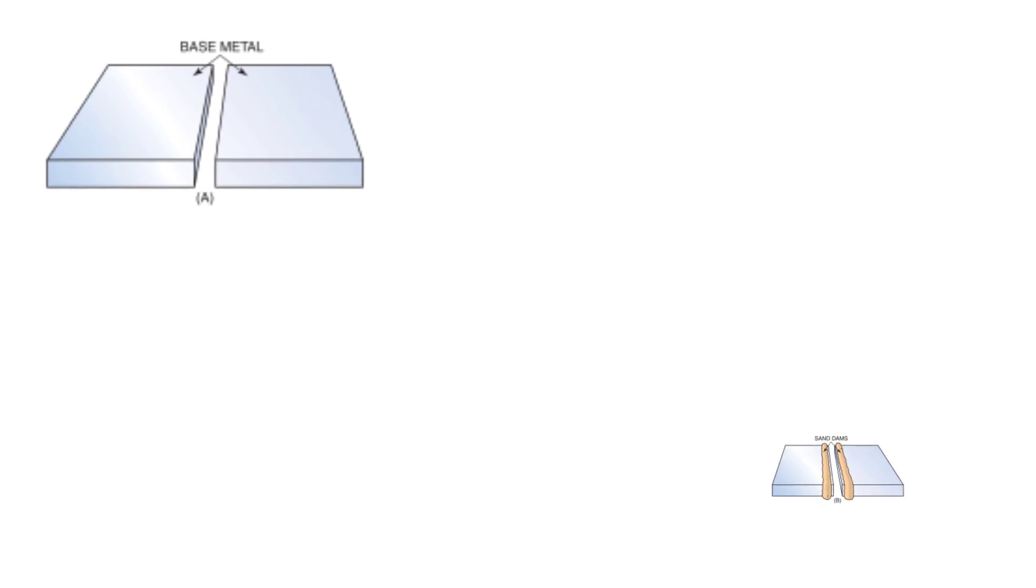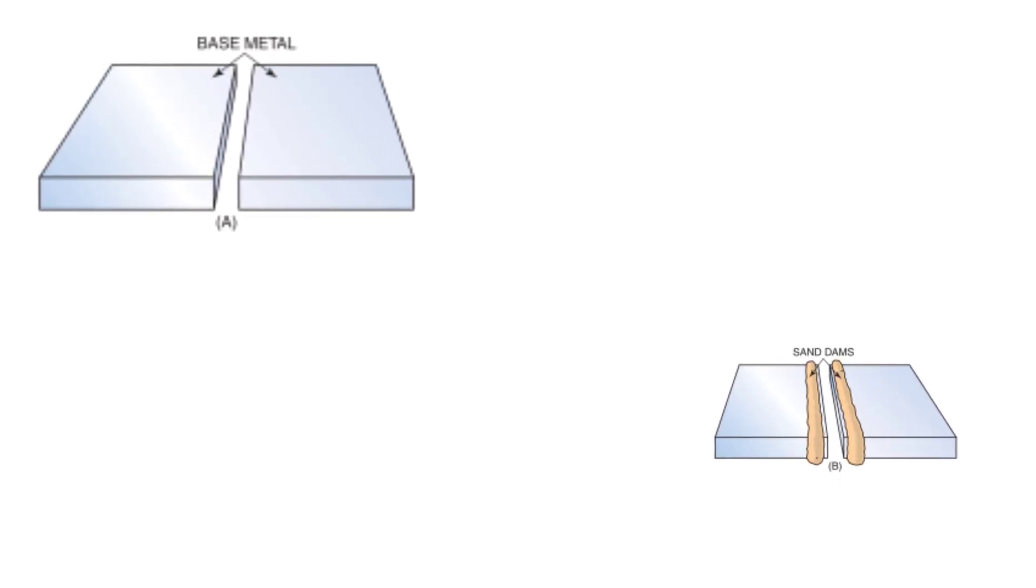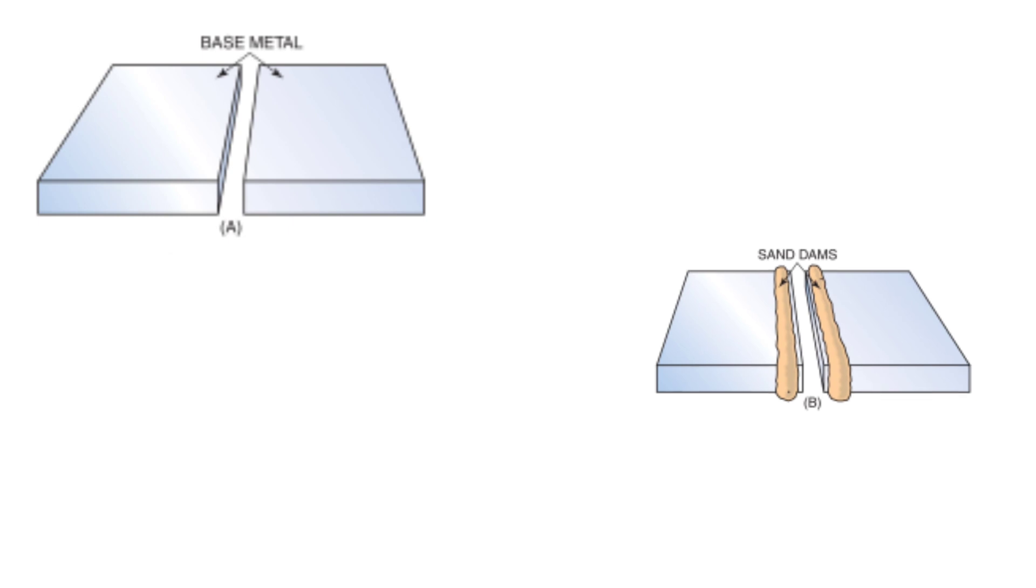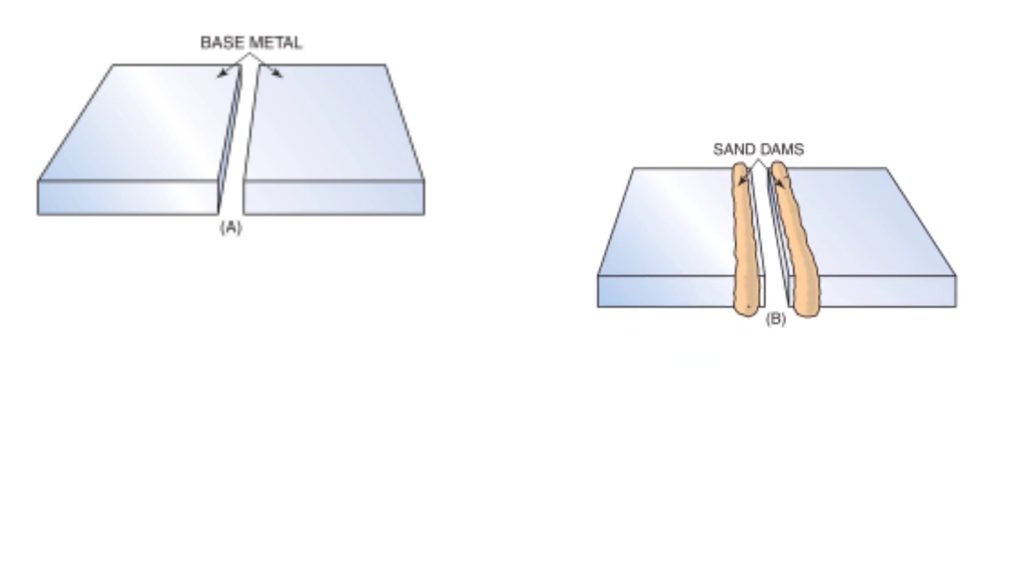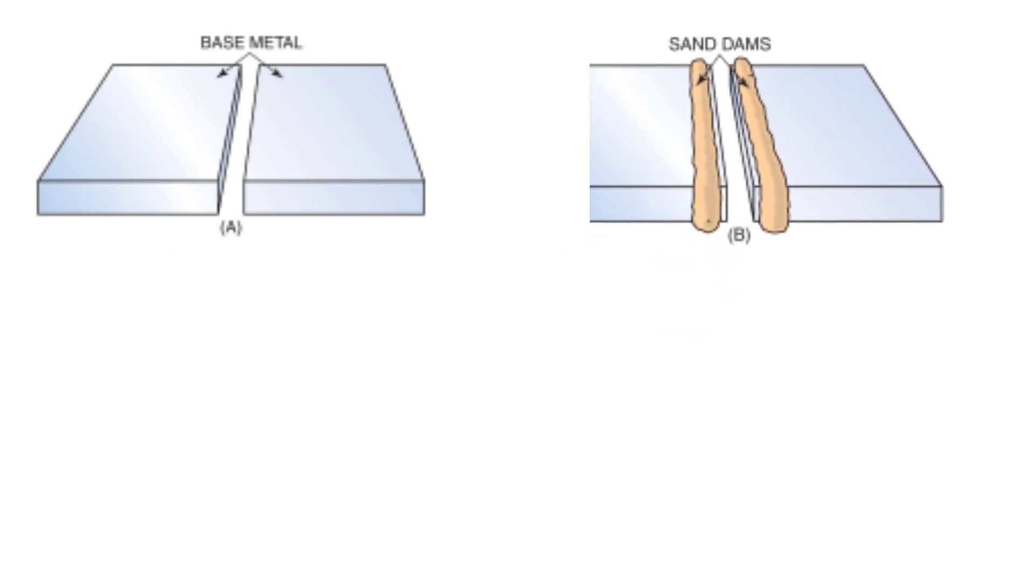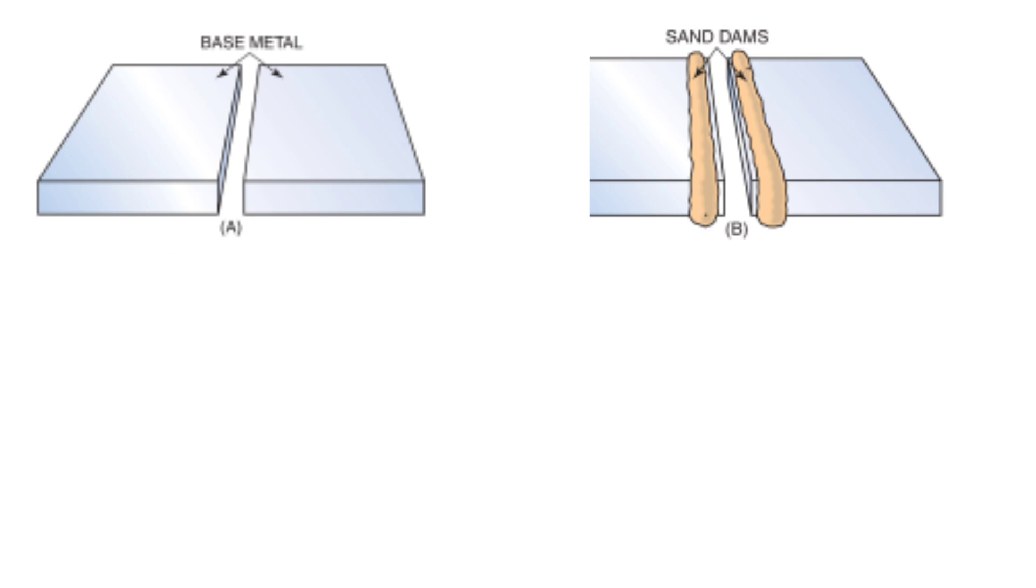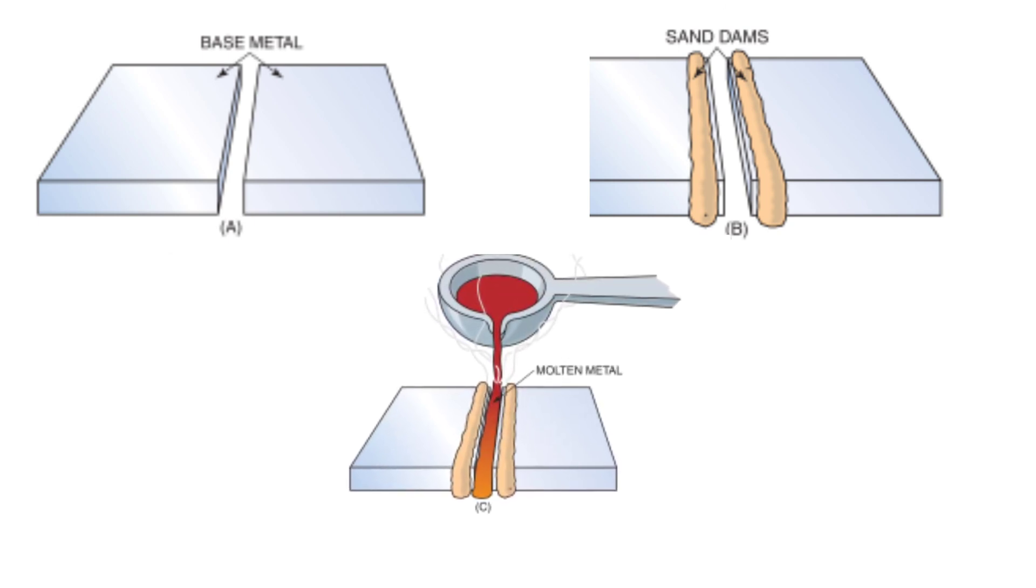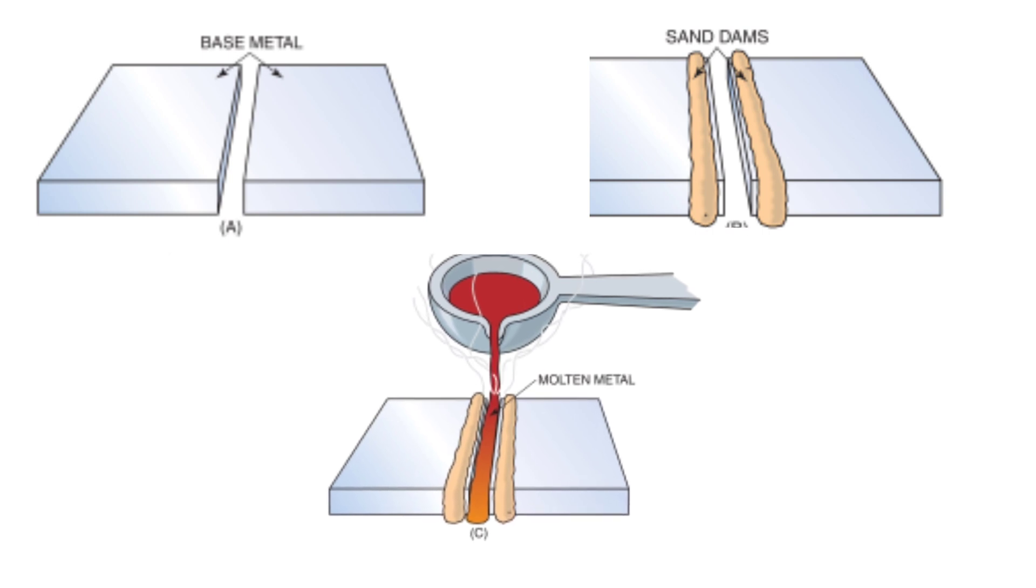Diagram A: Take two pieces of metal which is to be joined and place them close to each other as per requirement. Diagram B: Sand dams are molded according to the shape of the base metal. Here base metals are in rectangular shape, so sand dams are molded straight throughout the edges of both the base metals to hold the molten metal for joining purpose.